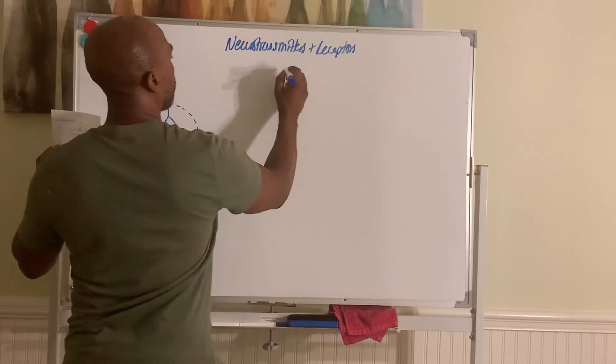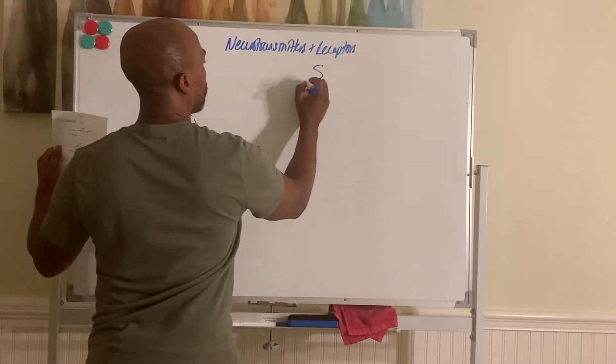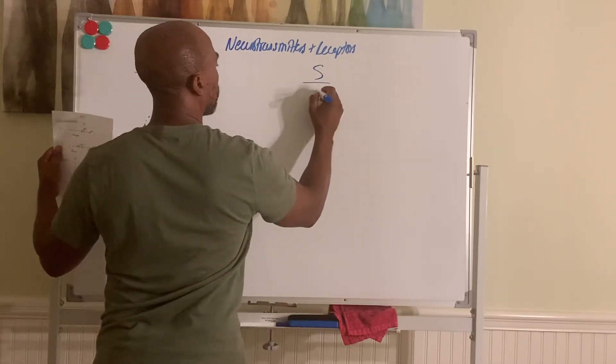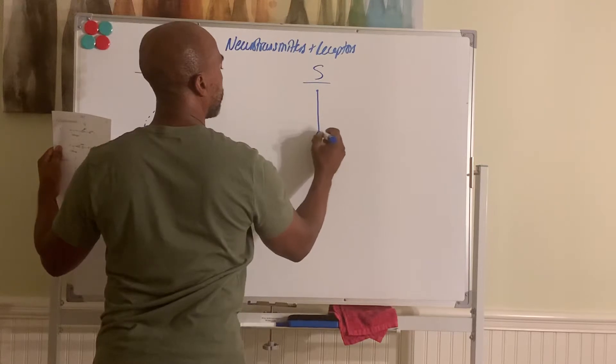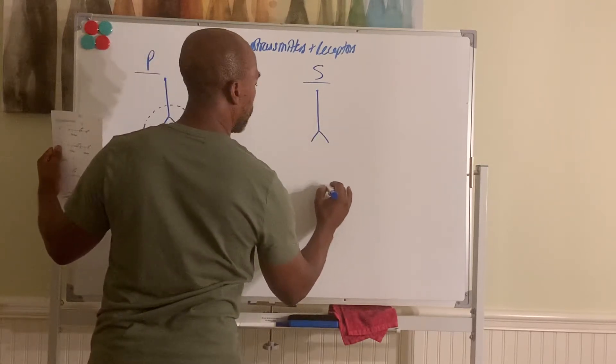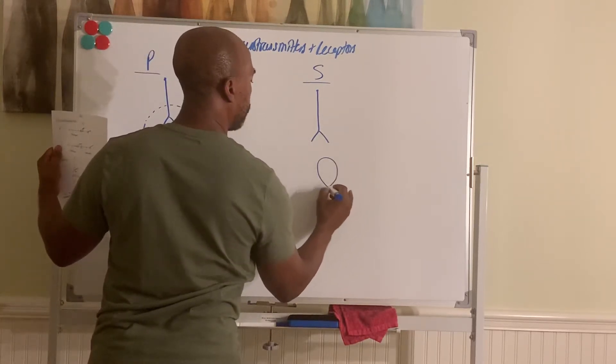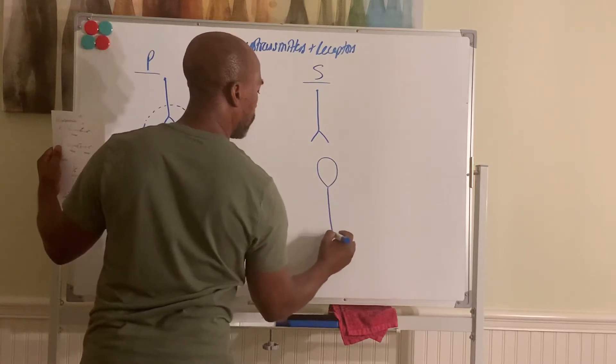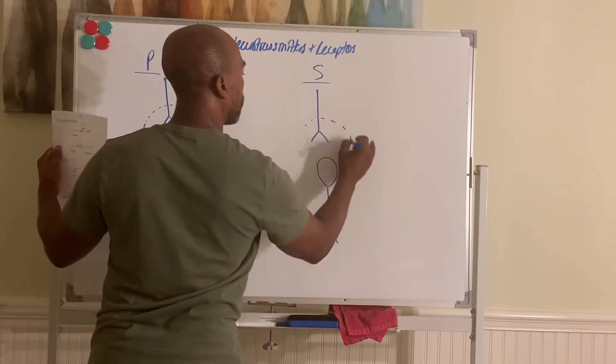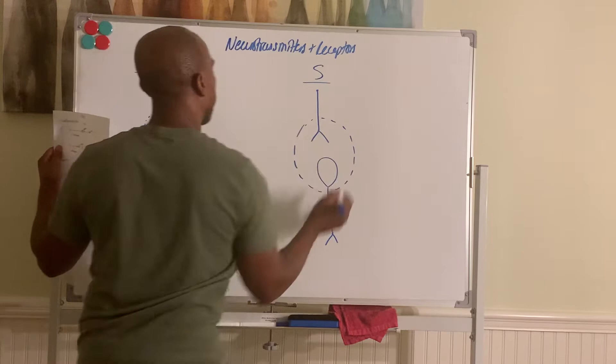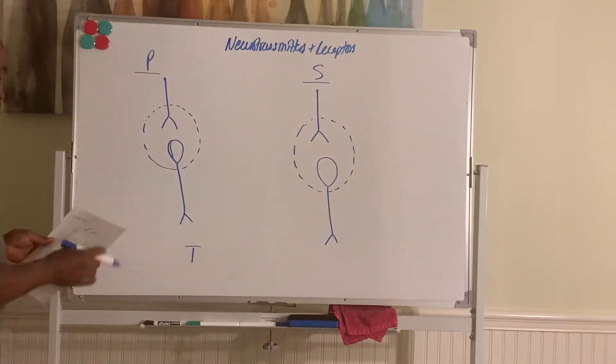Same here for the sympathetic nervous system. Incoming neurons, synapses with its post-ganglionic neuron and the autonomic ganglia.